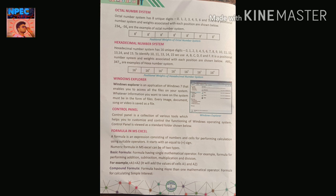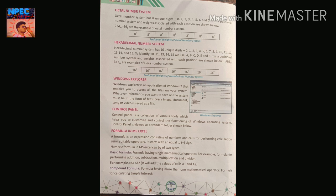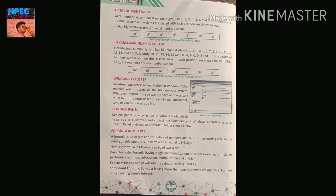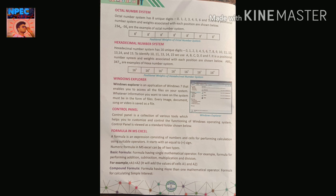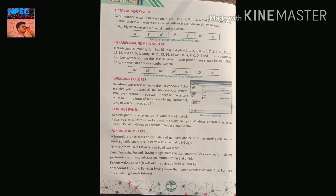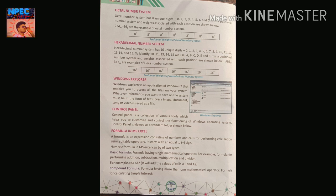Hexadecimal is a positional number system and the weights associated with each position are powers of 16: 16⁰, 16¹, 16², 16³, 16⁴, 16⁵, 16⁶. For example, AB5 to the base 16 is a hexadecimal number. This positional weight is used during conversion calculations.